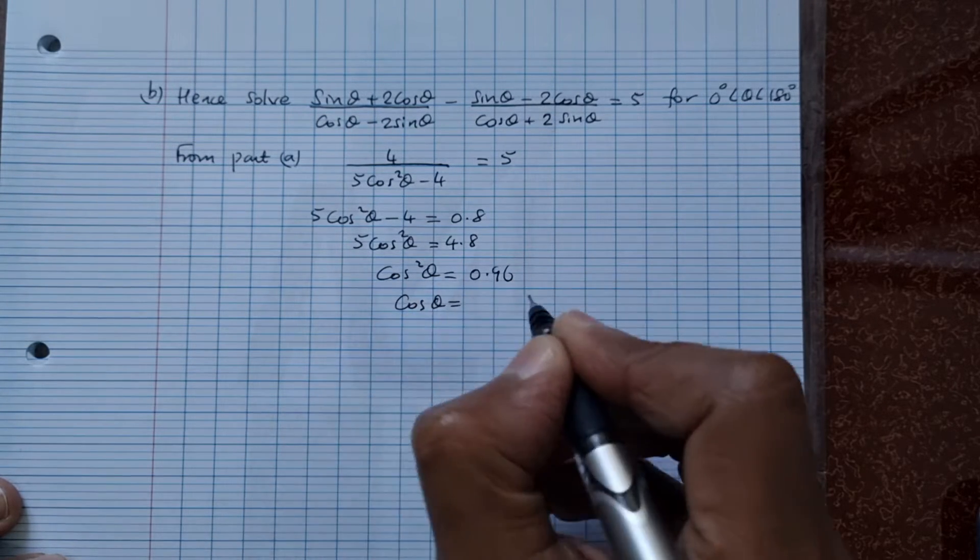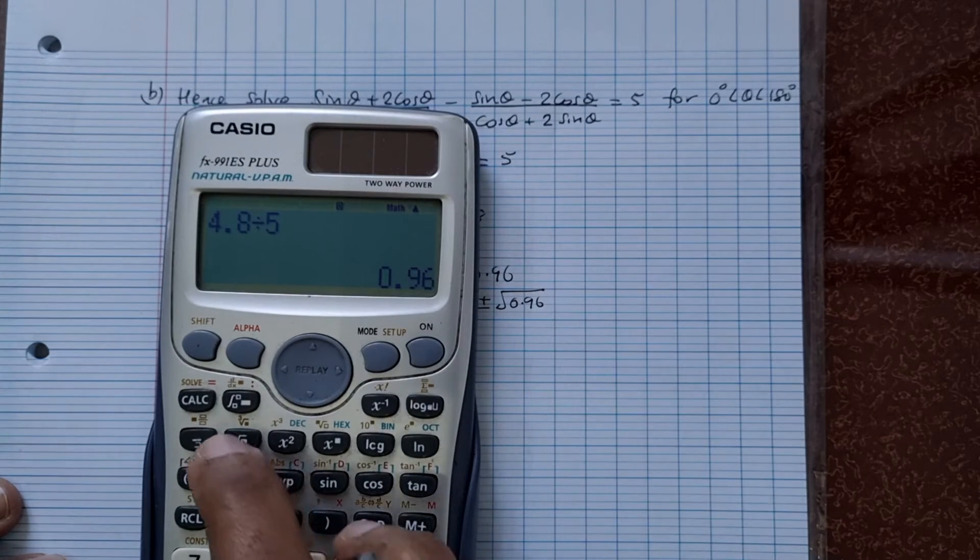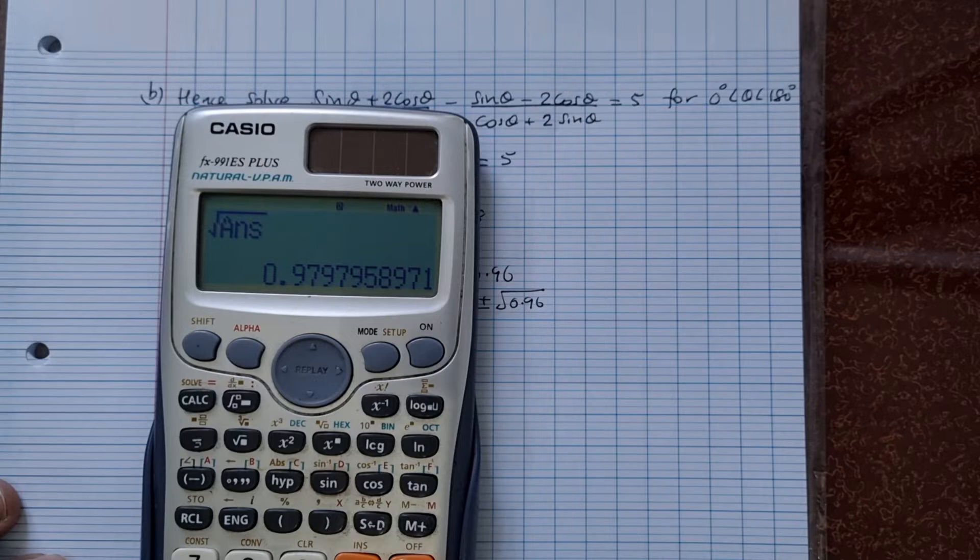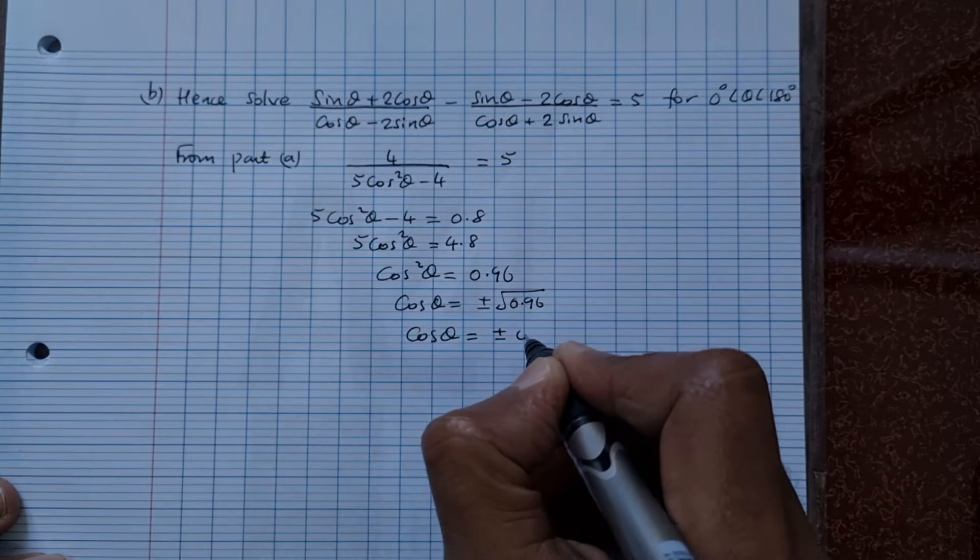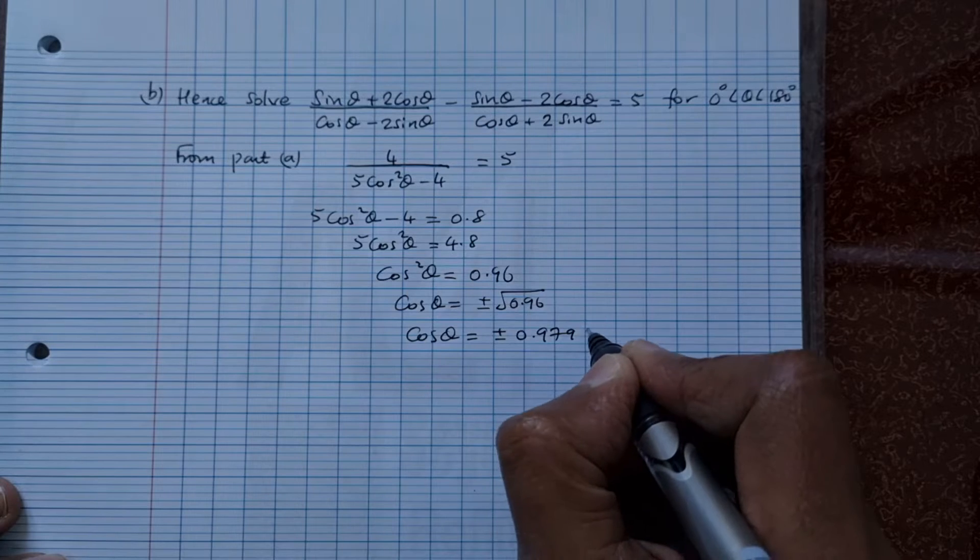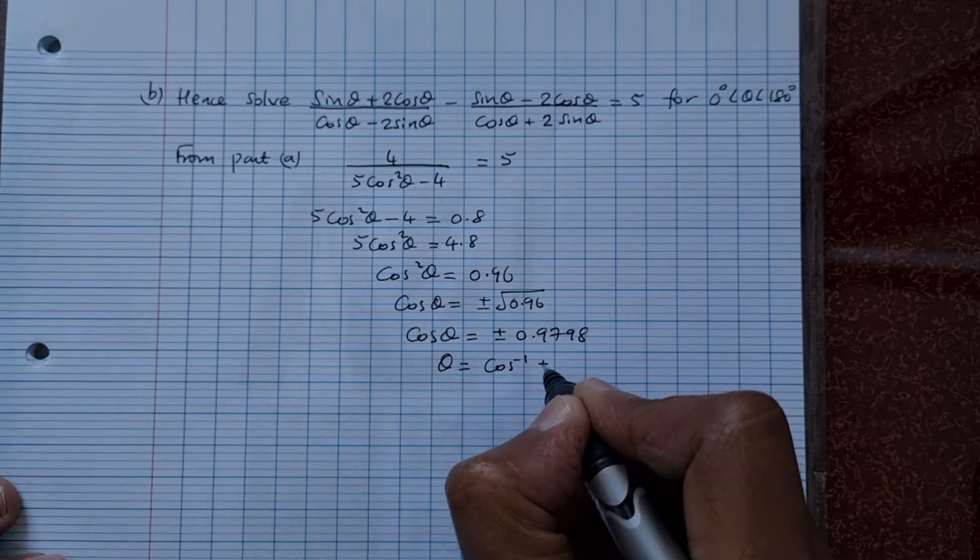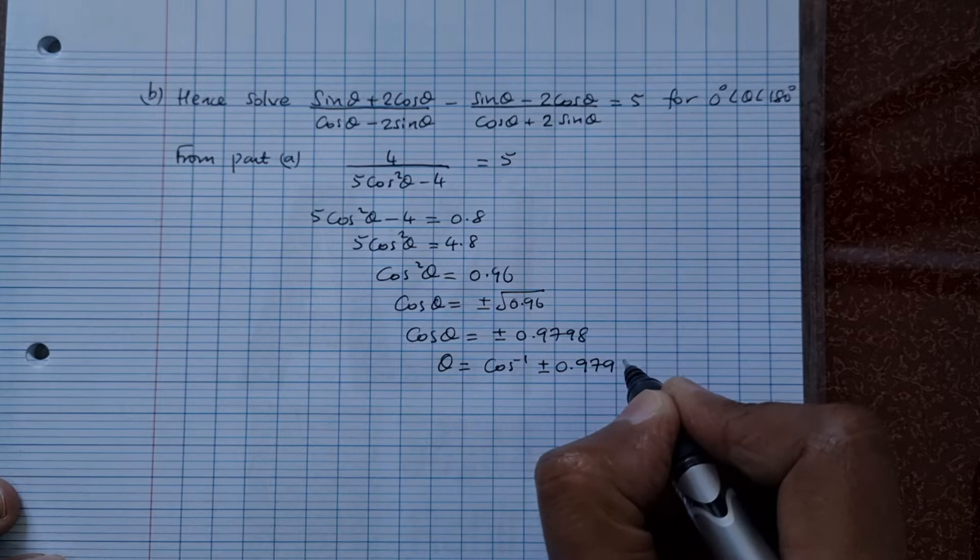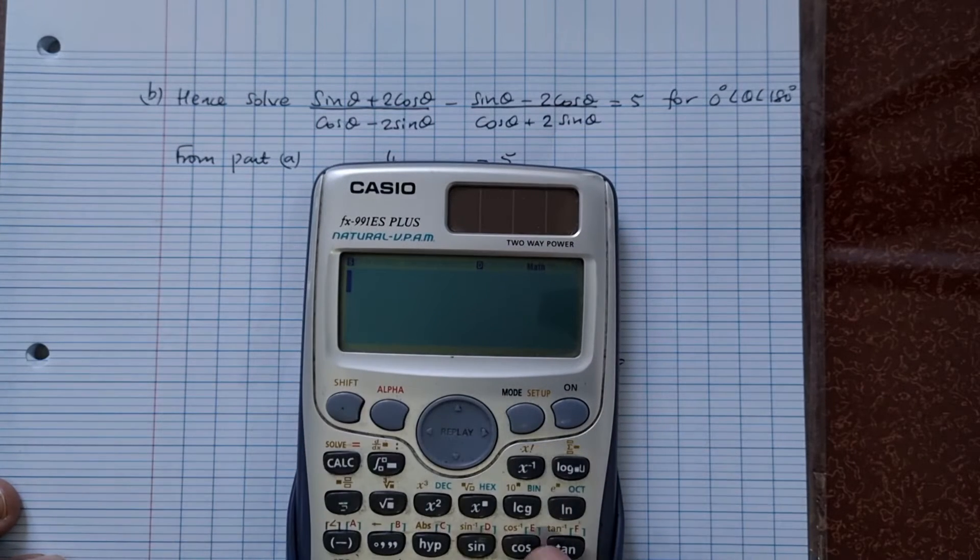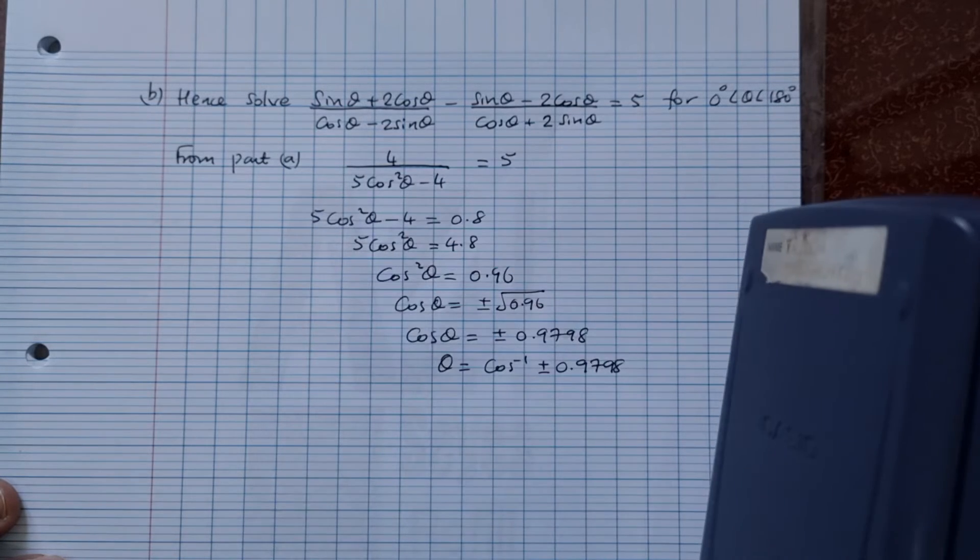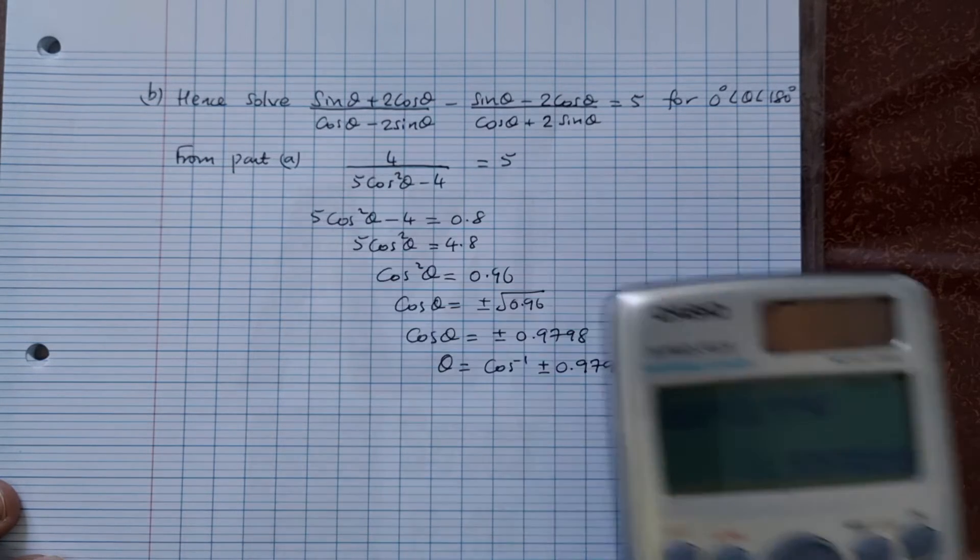So cos of θ is equal to plus or minus square root of 0.96. So let's take the square root of this, and you get 0.9798. So cos of θ is equal to plus or minus 0.9798. And therefore, θ is equal to cos inverse of plus or minus 0.9798. Now, we need to put our calculator into the degrees mode. So, cos inverse of 0.9798. And we get 11.54 degrees. Let's see 11.5 degrees as a basic angle.